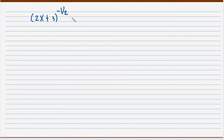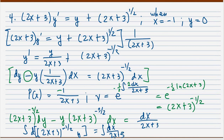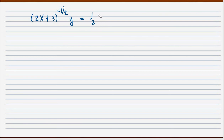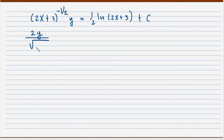The answer after integration is (2x plus 3)^(-1/2) times y equals (1/2)·ln(2x plus 3) plus c. Multiplying through by 2 to simplify, we get 2y over the square root of (2x plus 3) minus ln(2x plus 3) equals c. That is our general solution.